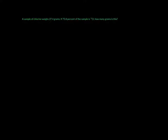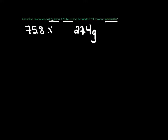Let's try another. A sample of chlorine weighs 27.4 grams. If 75.8% of the sample is Cl-35, how many grams is this? We have a percentage of 75.8% and a number of grams. The 27.4 grams sounds like the total — the whole sample. So 27.4 grams is our total. We want to find 75.8% of this, meaning the smaller piece, so our answer should come out less than 27.4 grams.